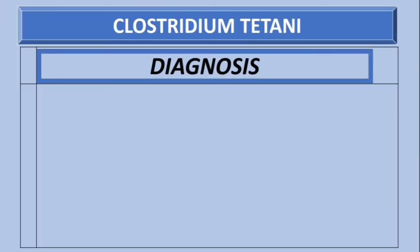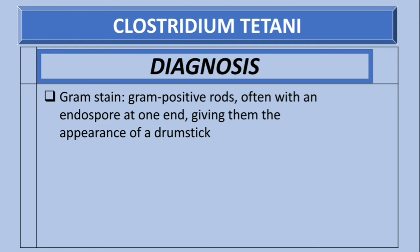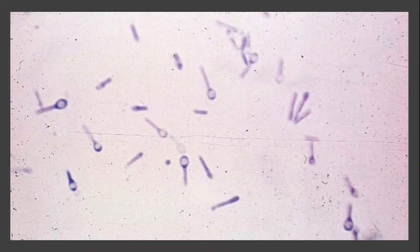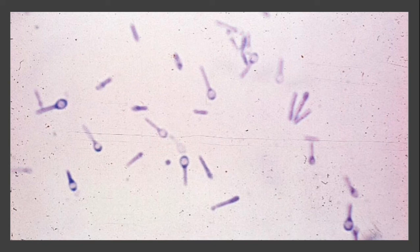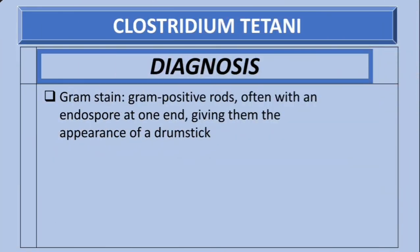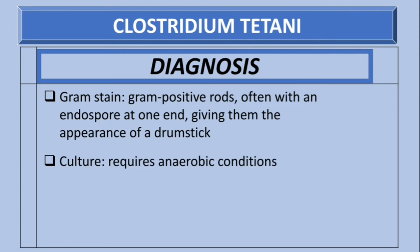For diagnosis, the first step is gram staining. Clostridium tetani are gram-positive rods, often with an endospore on one end, giving them the appearance of a drumstick — a commonly tested feature. You can see the endospores at the ends in microscopy images. Another method is culture, which requires creating anaerobic conditions for this bacteria.